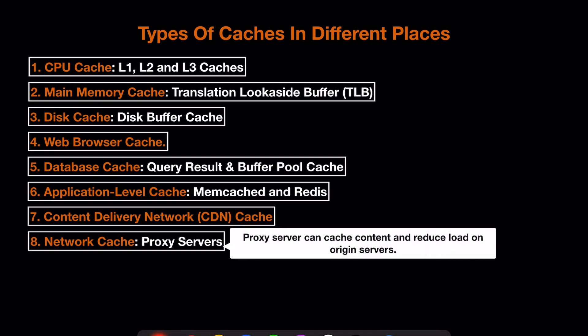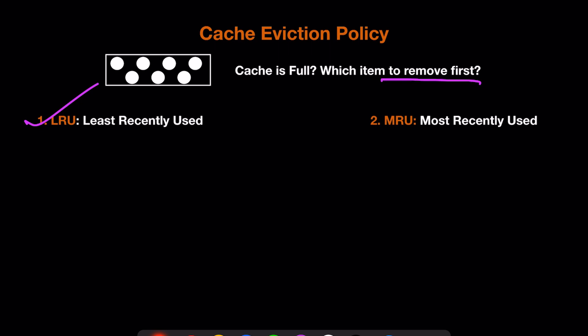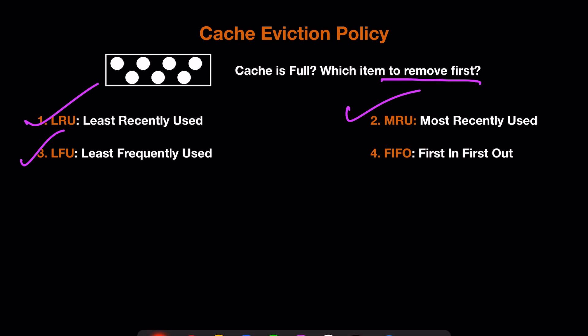Let's talk about cache eviction policy. Caches are limited and expensive, so we cannot have infinite cache size. When the cache is full, we need to free space by removing items — the question is which item to remove first. Different policies include LRU (Least Recently Used), MRU (Most Recently Used), which are easier to implement, LFU (Least Frequently Used), which requires maintaining a frequency count and is more complex, FIFO (First In First Out), and RR (Random Replacement), which is generally not ideal in real caching scenarios.